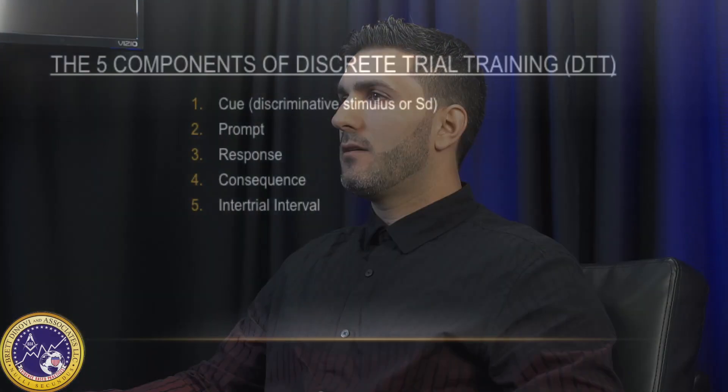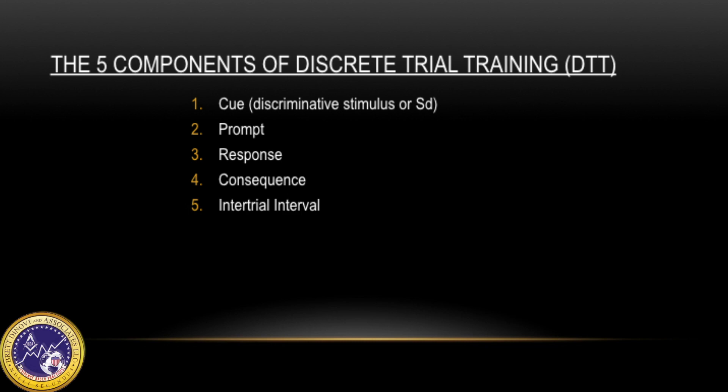Discrete trial consists of five components which include the cue, known as a discriminative stimulus or SD, then we have prompt, response, consequence, and inter-trial interval.